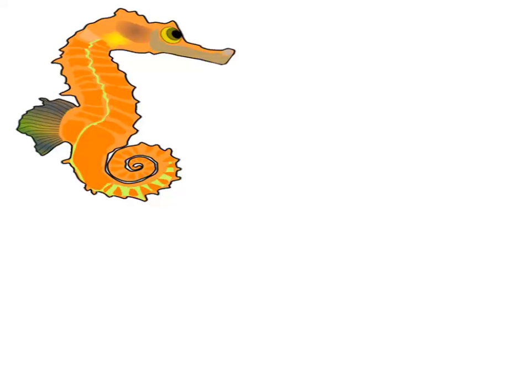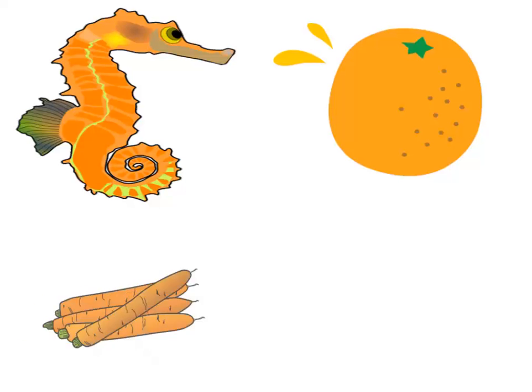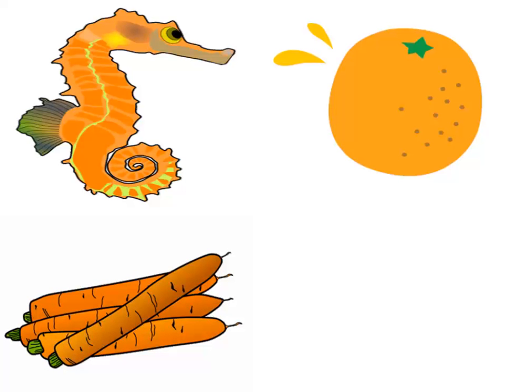Let's take another color. What's this color? Orange, excellent! It's an orange seahorse. Let's take another picture — what's this? It's an orange. And what's the color of the orange? It's orange also, excellent baby class.